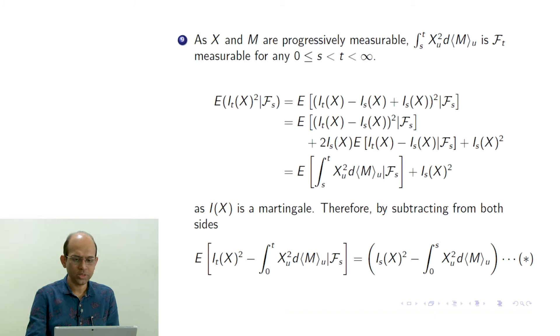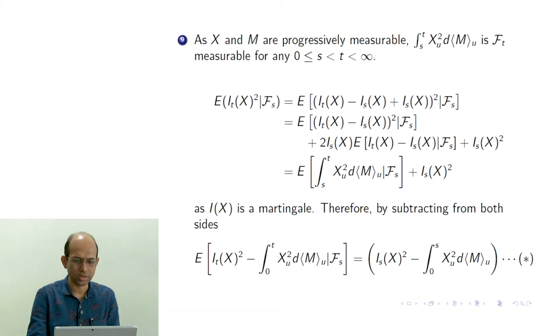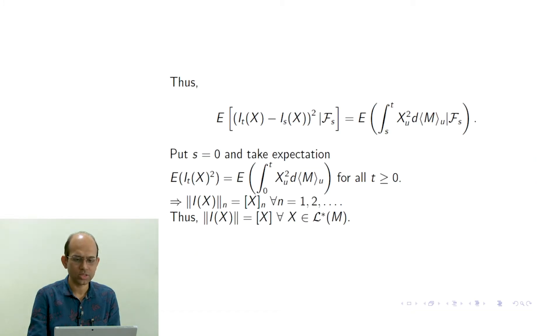We prove that I_X is a martingale. We have defined stochastic integral as a map from L star to MC2, so the image of a progressively measurable integrand under integration is a square integrable continuous martingale. Integration is a martingale — this comes from the definition. Now the term E[(I_T(X) − I_S)² | F_S] from the earlier result equals the conditional expectation of the integral from s to t of X_u² d⟨M⟩_u given F_S.